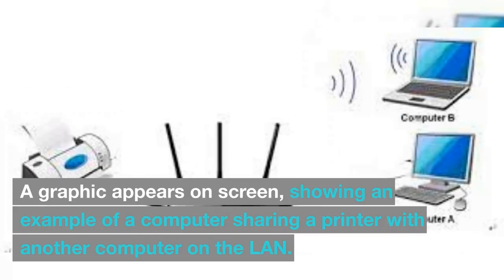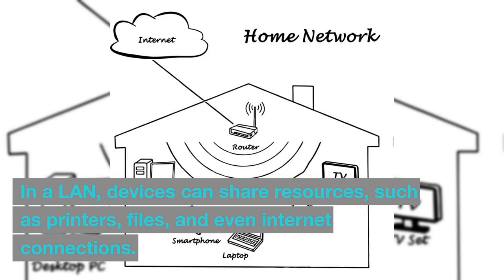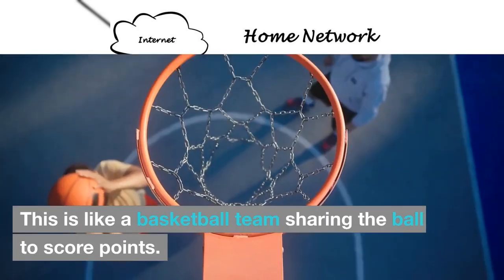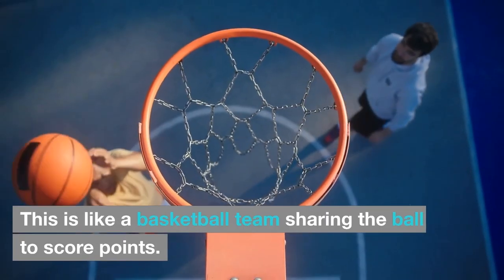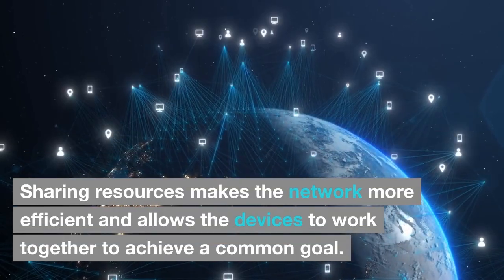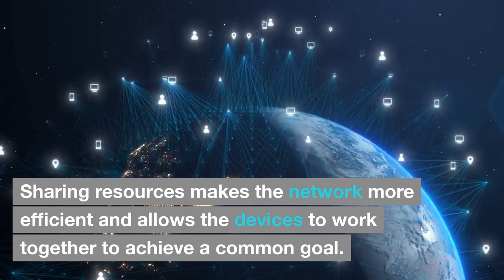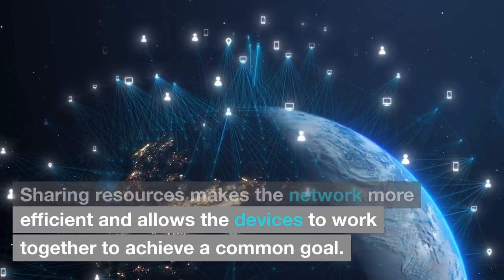A graphic appears on screen showing an example of a computer sharing a printer with another computer on the LAN. In a LAN, devices can share resources such as printers, files, and even internet connections. This is like a basketball team sharing the ball to score points. Sharing resources makes the network more efficient and allows devices to work together to achieve a common goal.